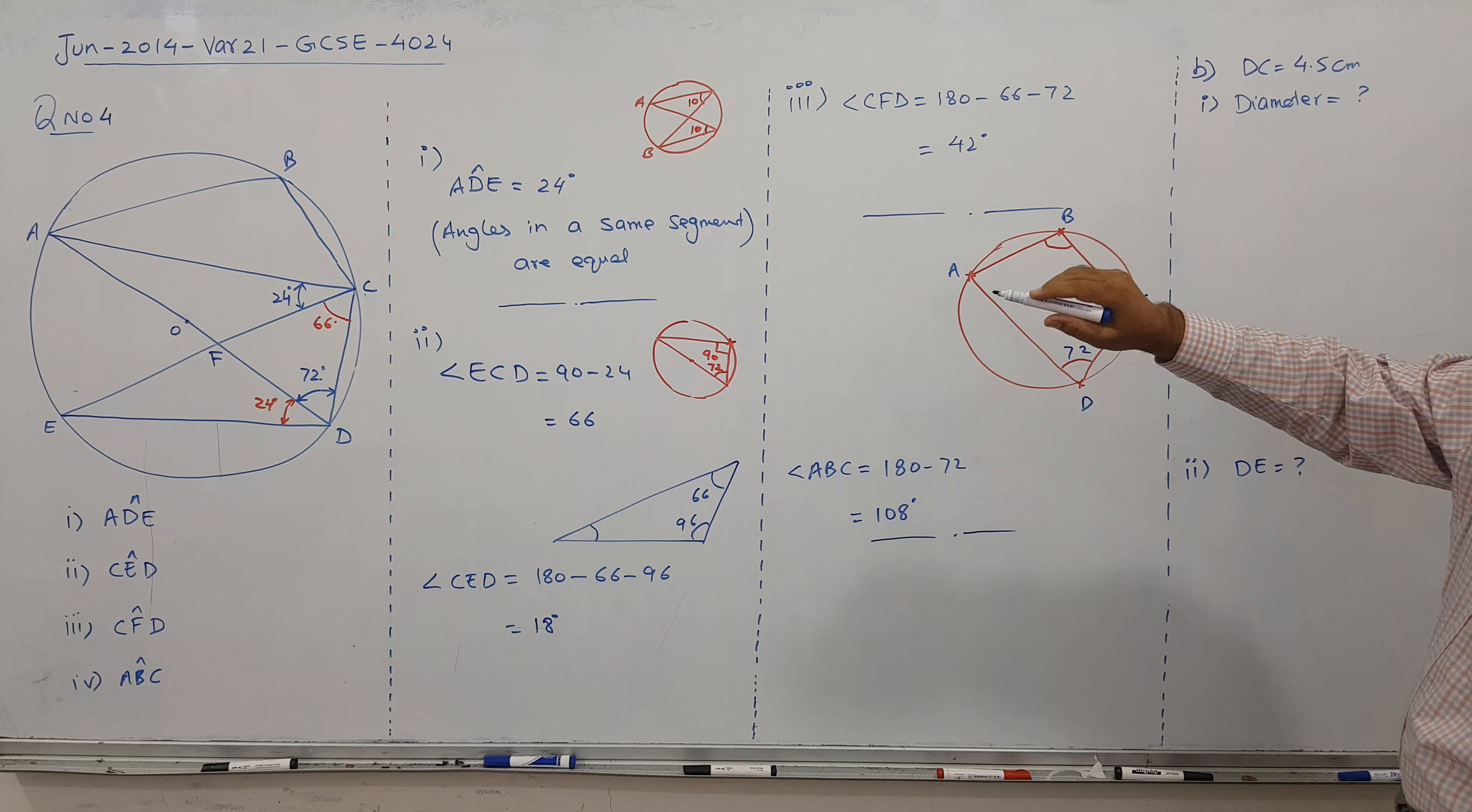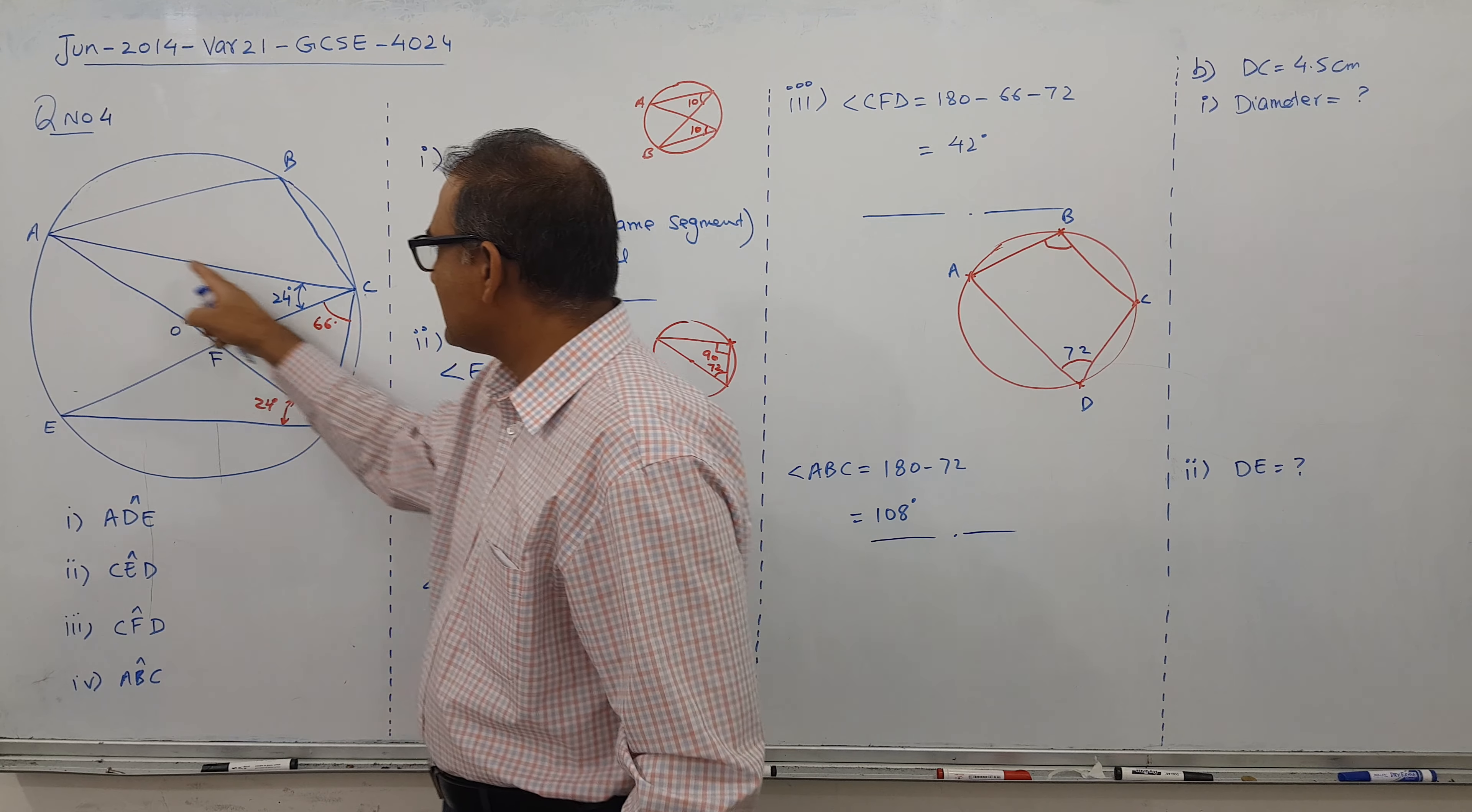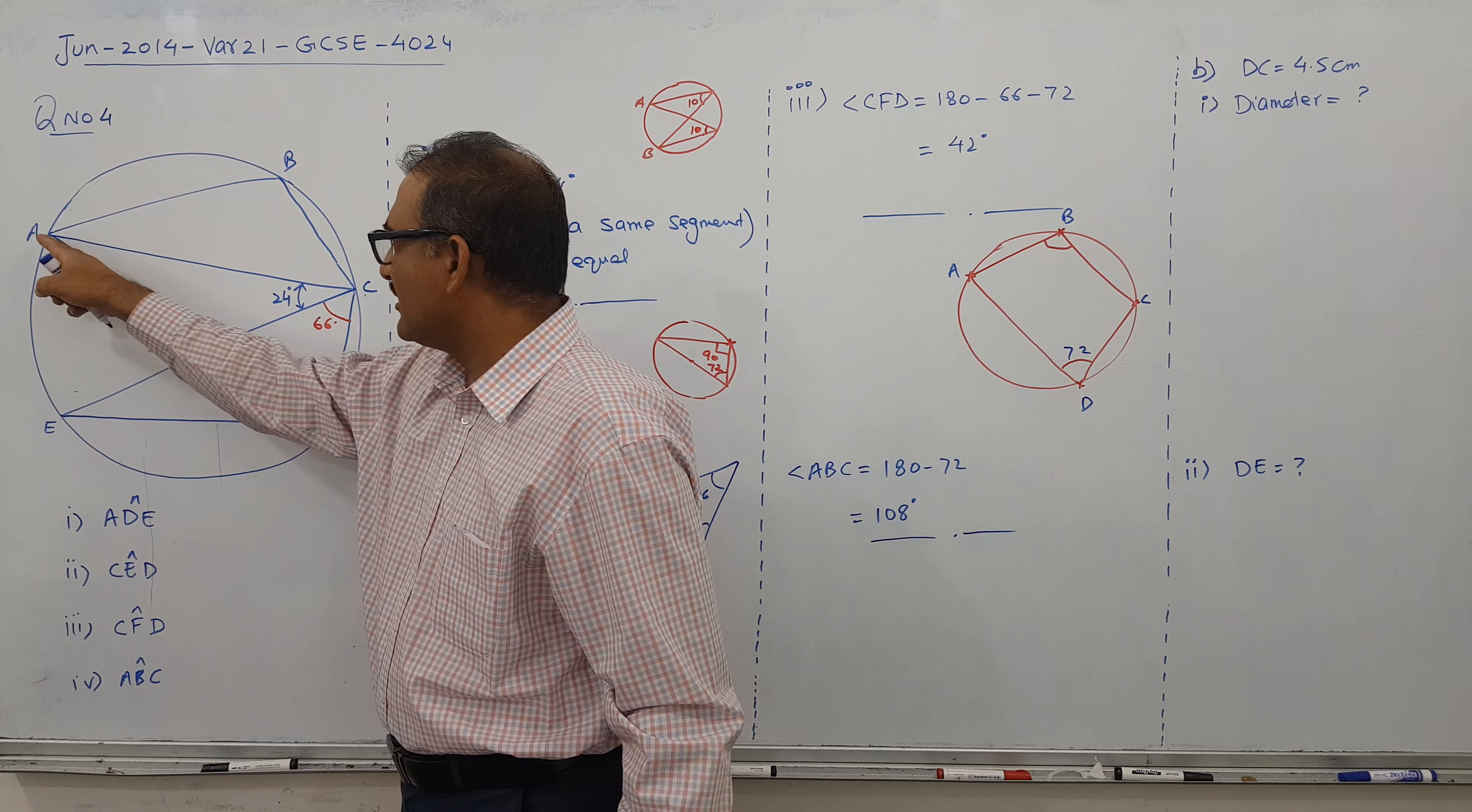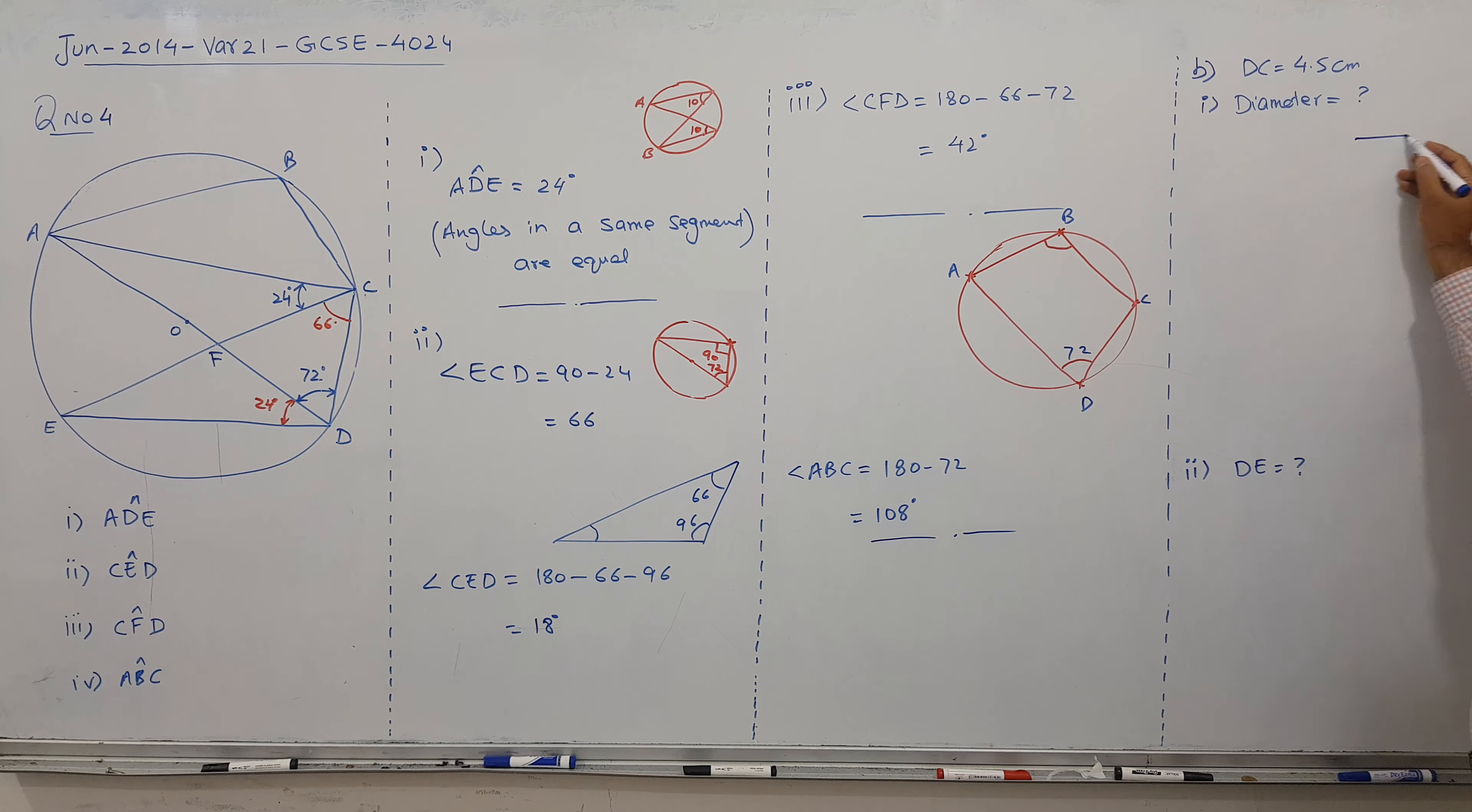The diameter: we're given DC as 4.5 centimeters. I have to plot this triangle ACD. This is 90 degrees, here we have 72 degrees, and CD is 4.5 centimeters. In front of hypotenuse is required, so adjacent by hypotenuse gives you cos theta.